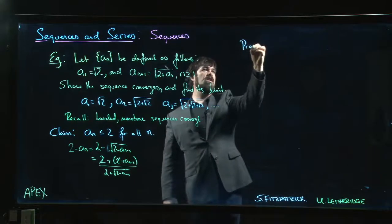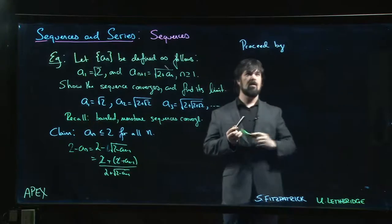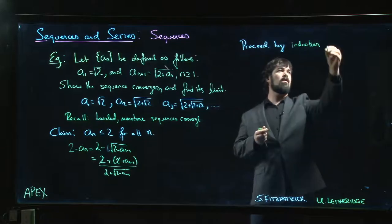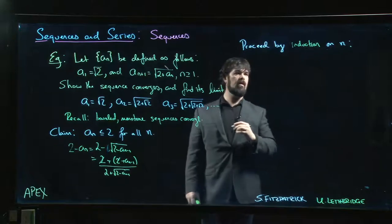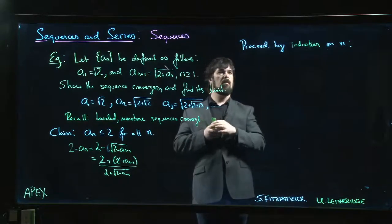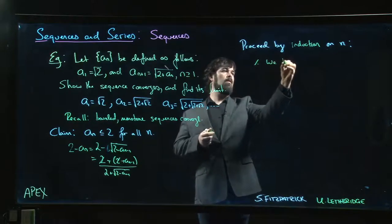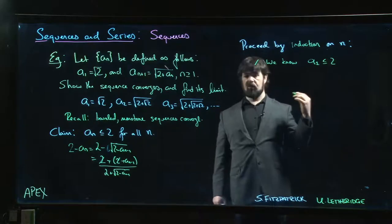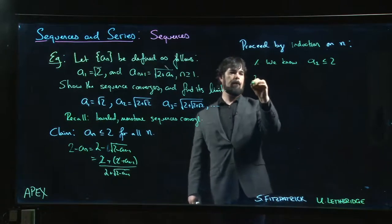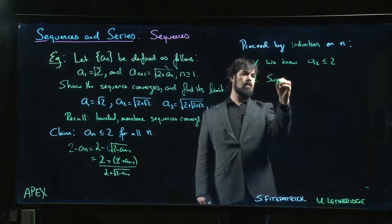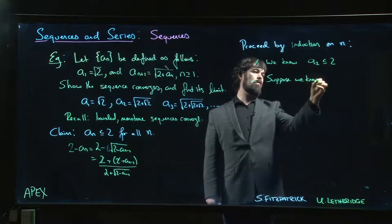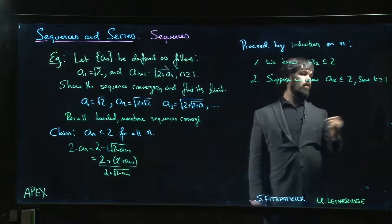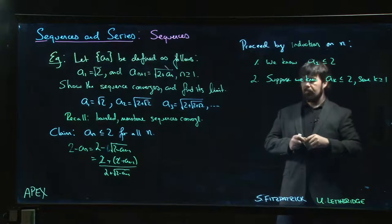The right way to do this is using a technique called induction — induction on n. First, we know that a_1 is less than 2, because a_1 equals root 2, and we know root 2 is less than 2. Next, we suppose that some a_k is less than or equal to 2.